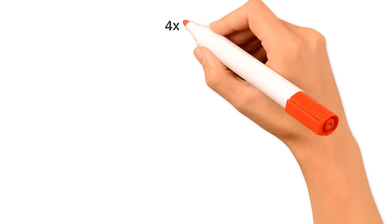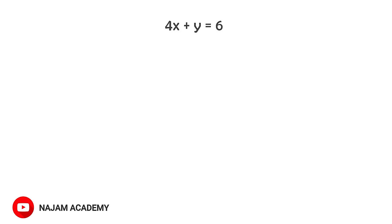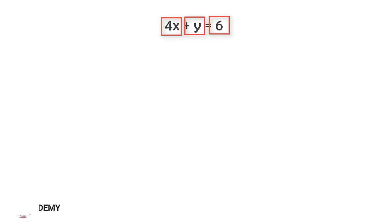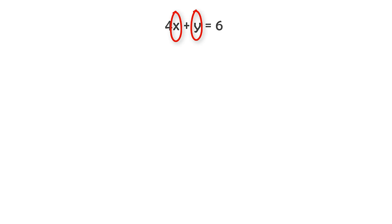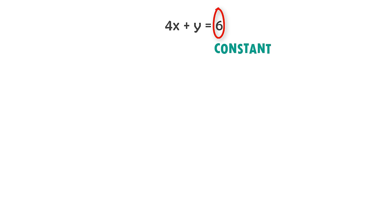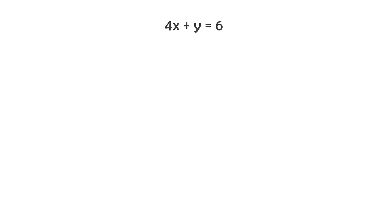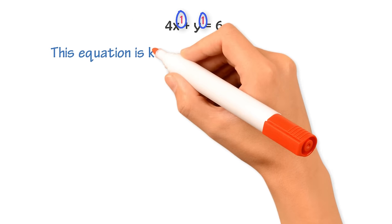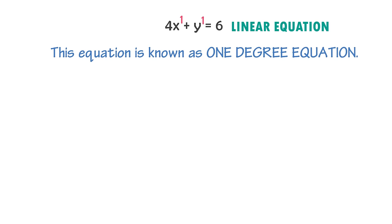If I write 4x plus y is equal to 6, in this equation there are three terms: 4x, y, and 6. The x and y are known as variables, while 6 is the constant and 4 is the coefficient of variable x. The highest power of variable x is 1 and the highest power of variable y is also 1. Hence, all variables in this equation have the highest power 1. Therefore, this equation is known as a one-degree equation or linear equation.